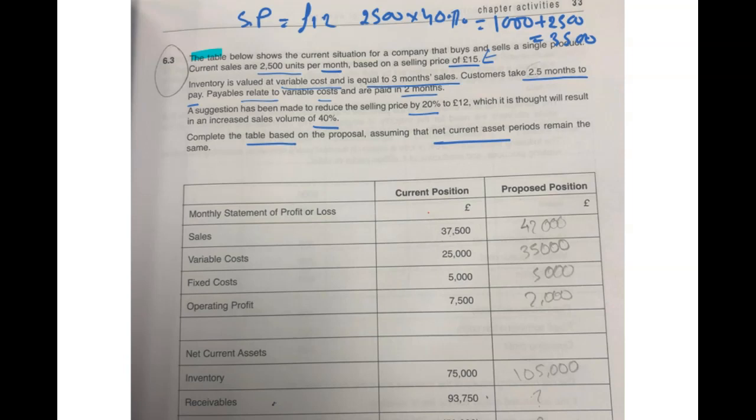Sales: the current position is £37,500, because 2,500 times £15 equals £37,500. But if you remember, our new sales are 3,500 units and the selling price is £12. So £12 times 3,500 equals - what does the calculator say? £42,000. Super, very well done. £42,000 is the answer.